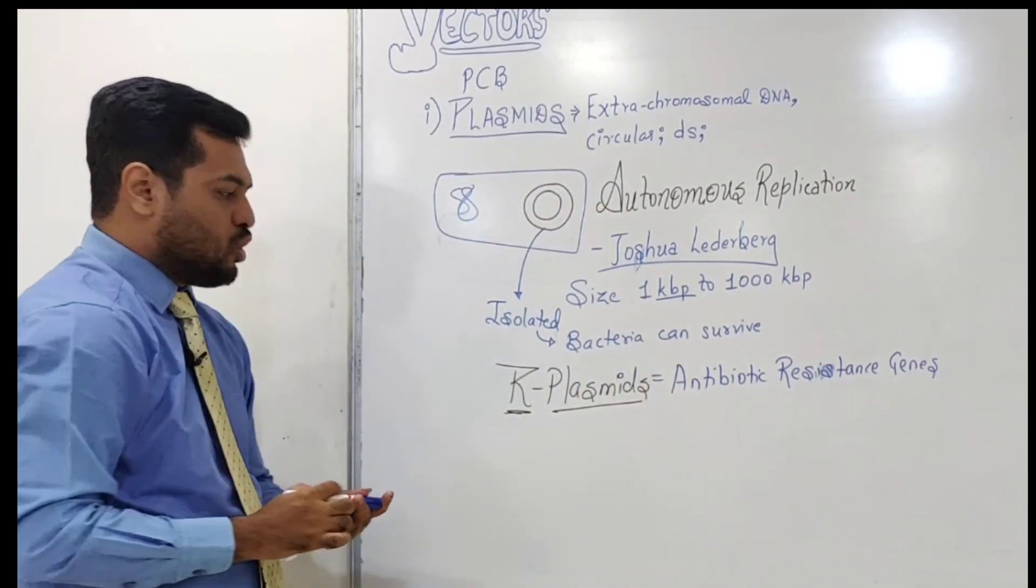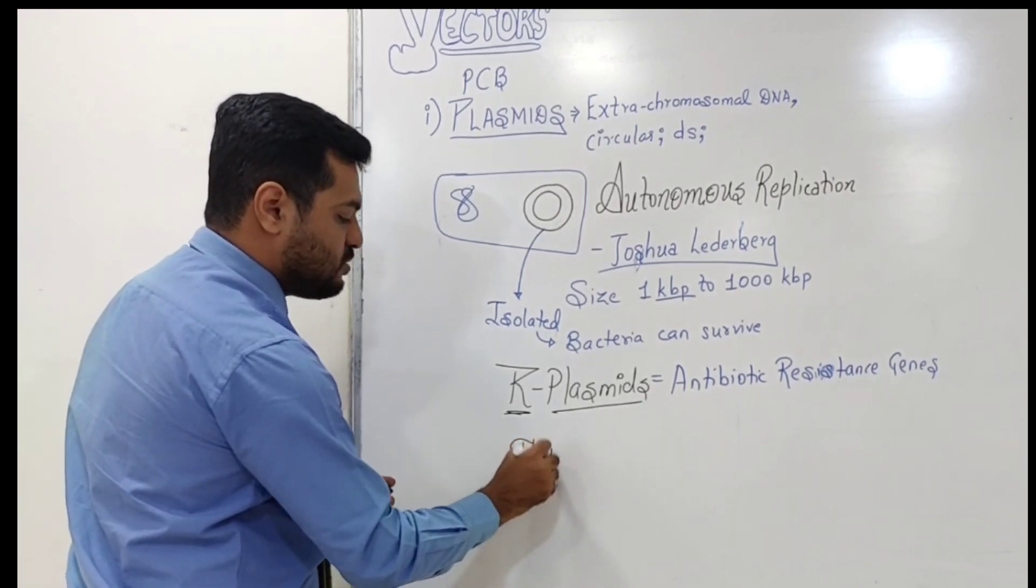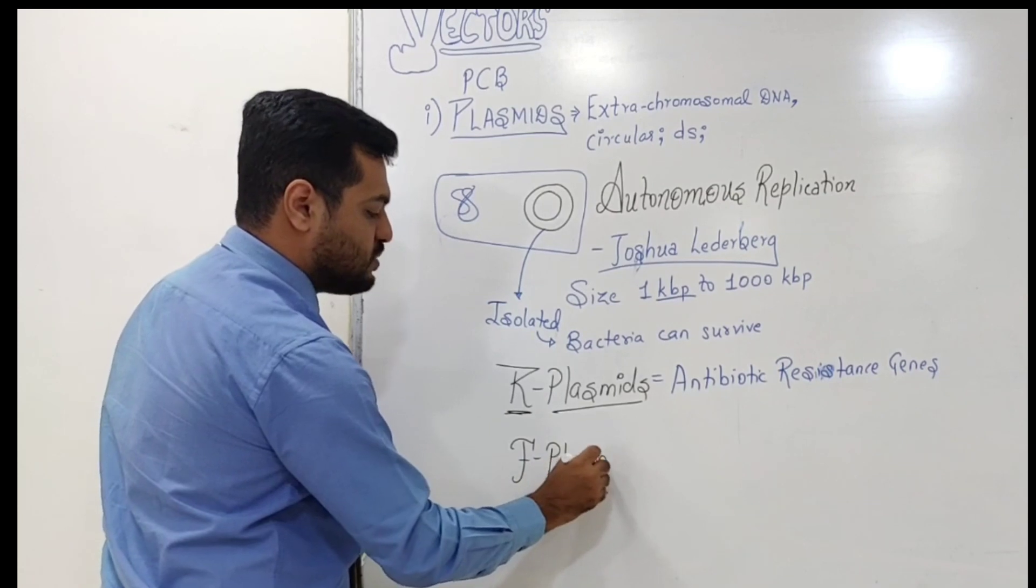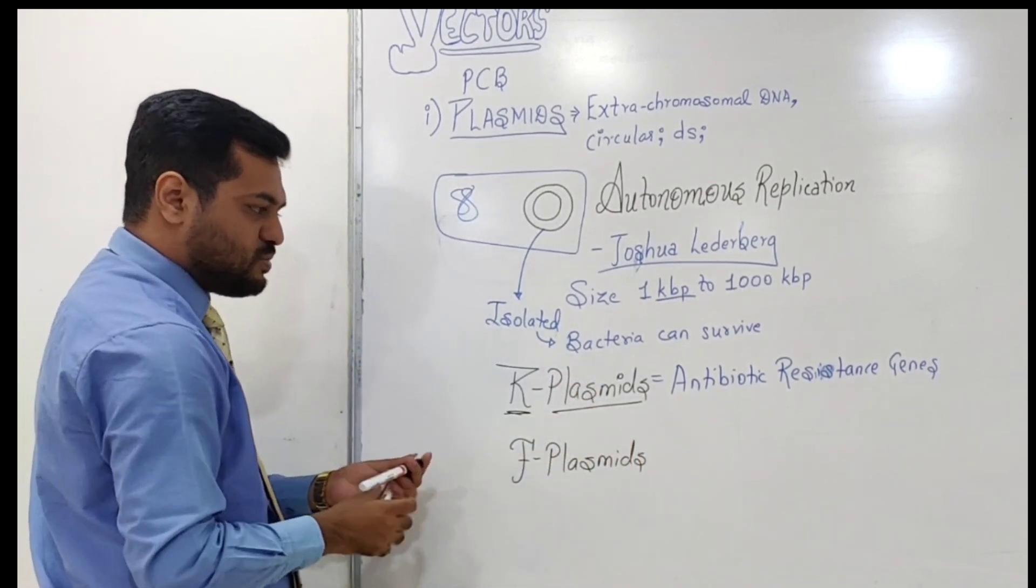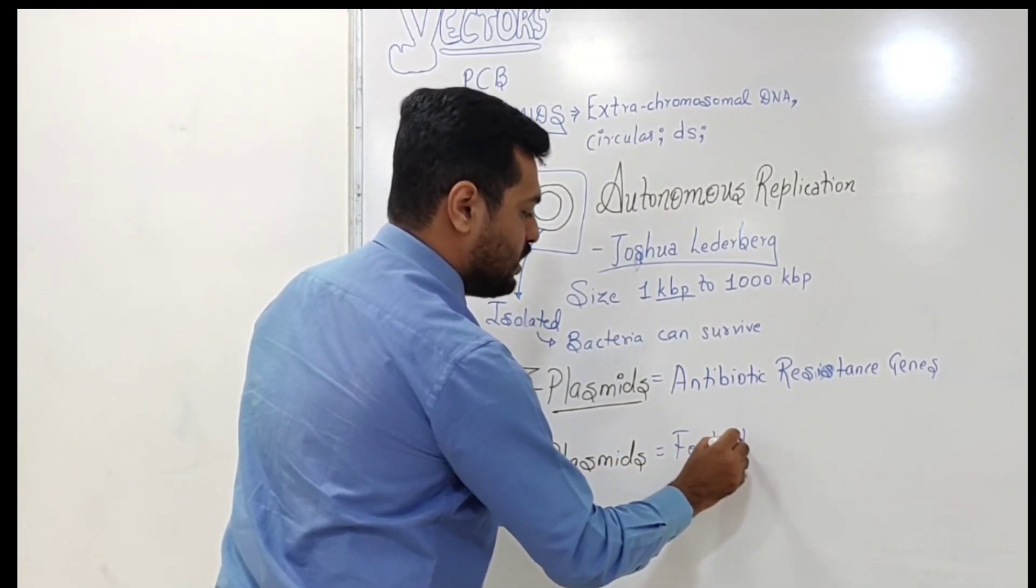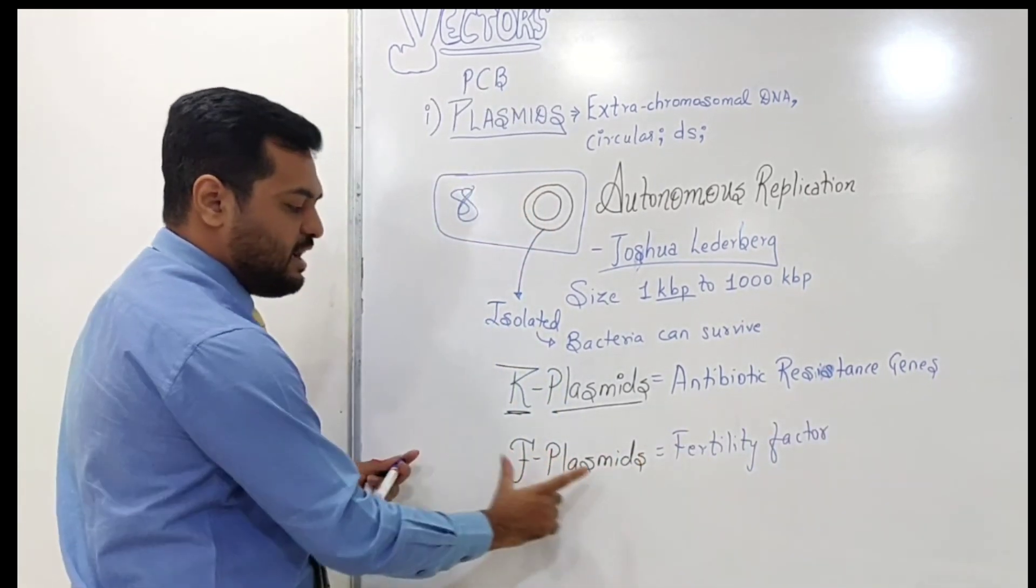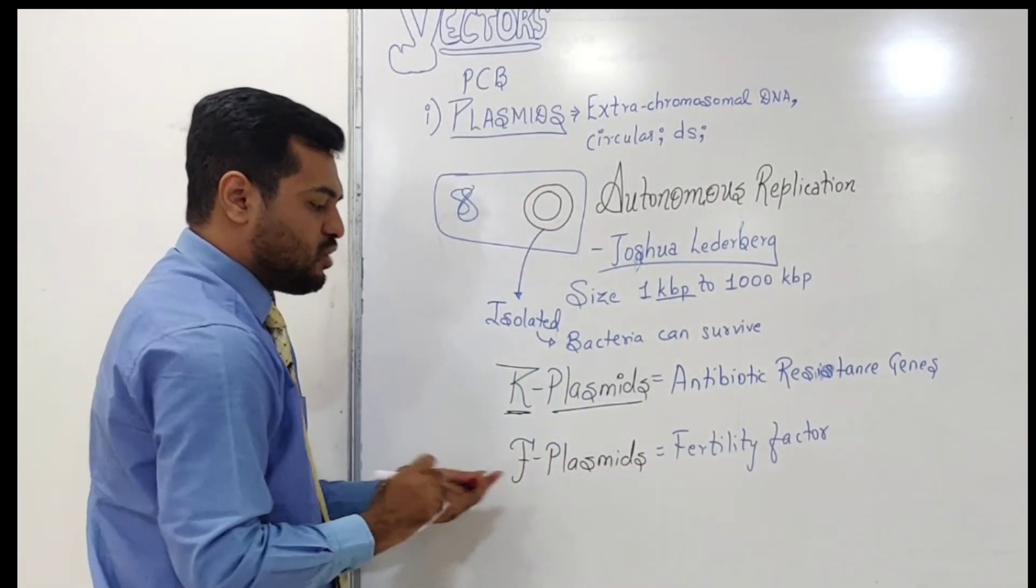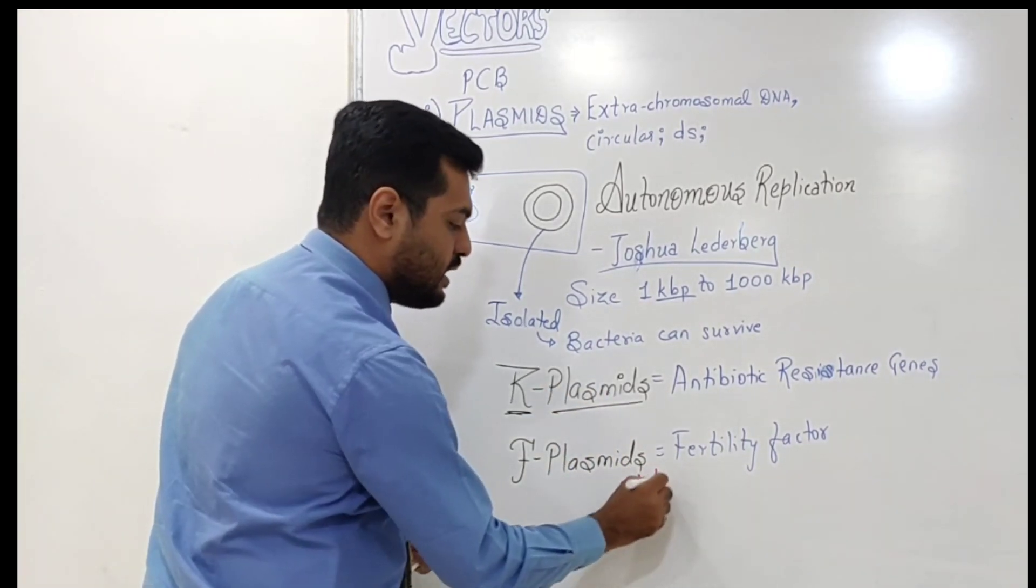The second type of plasmid is the F plasmid, which stands for fertility factor. Bacteria that have F plasmid are called F plus bacteria or male bacteria.